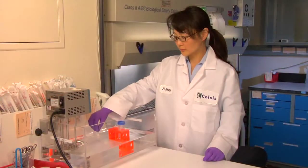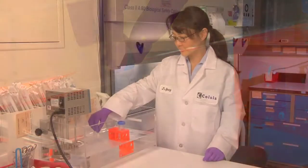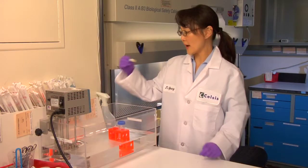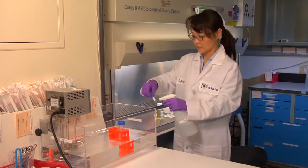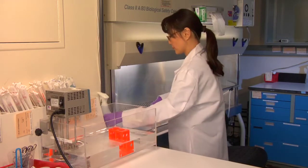After about one minute, invert the vial to see if it has begun to thaw. If not, return to bath. Wait a few seconds and invert again. Once the ice pellet releases from the vial wall, the cells are ready to be poured into the pre-warmed InVitroGRO CP medium.